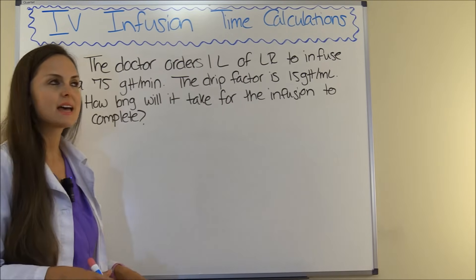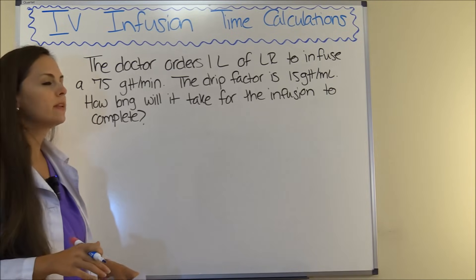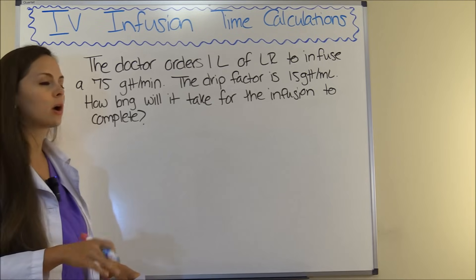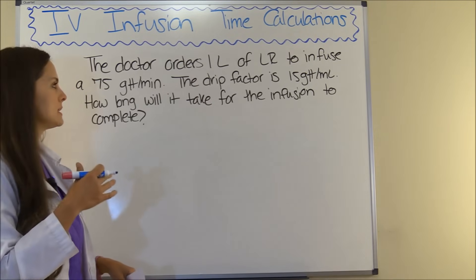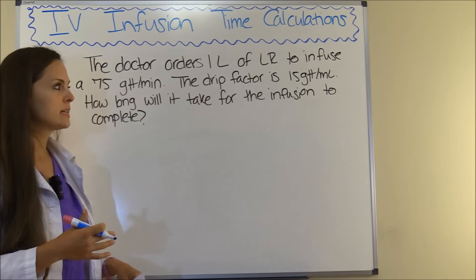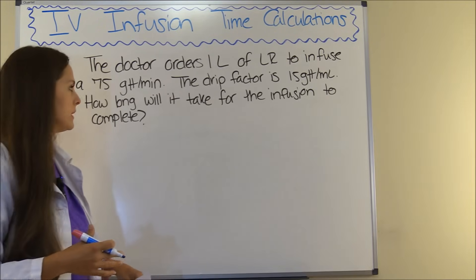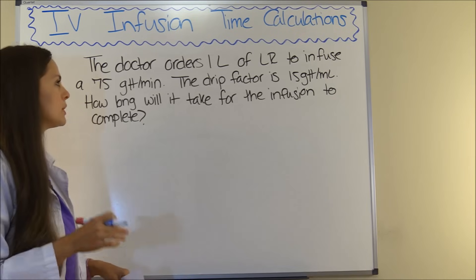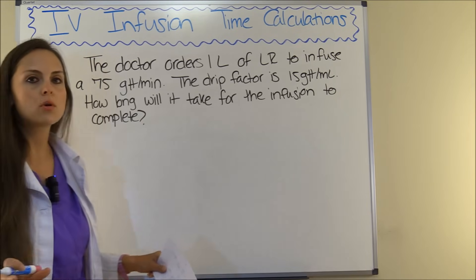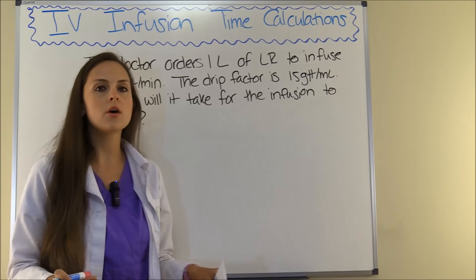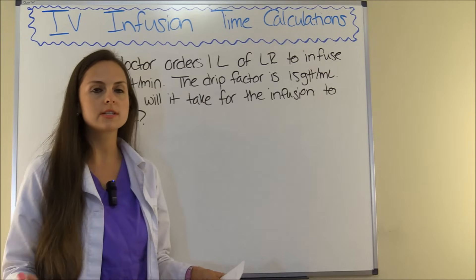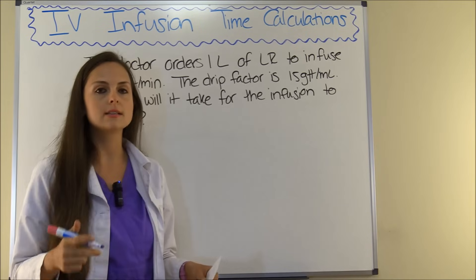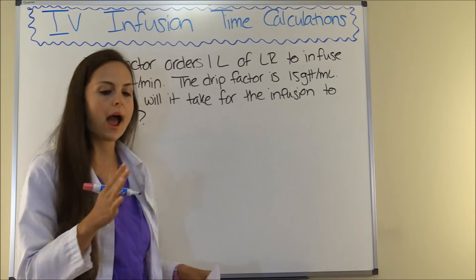This problem says the doctor orders one liter of LR to infuse at 75 drops per minute — that's what GTT means. The drip factor is 15 drops per milliliter. How long will it take for the infusion to complete? This problem wants to know how many hours it's going to take for this infusion to be done running, so where we're trying to get is to hours.